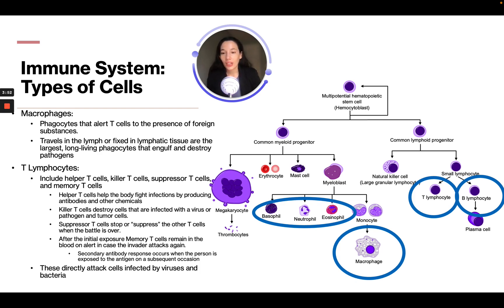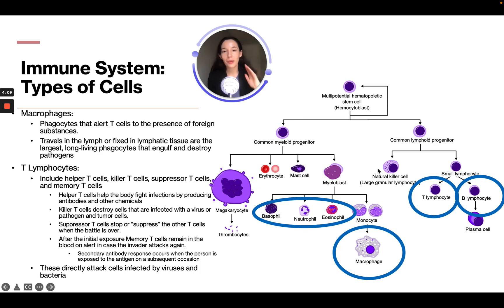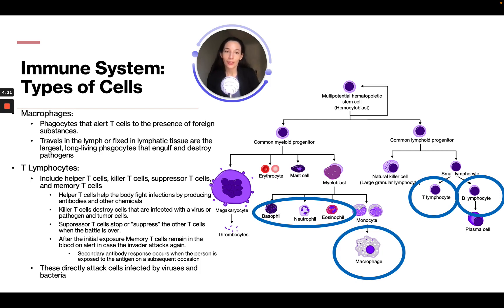A secondary antibody response occurs when the person is exposed to the antigen on a subsequent occasion, and these directly attack cells infected by viruses and bacteria. The names of the T cell types pretty much tell you their definitions: helper T cells are helping, killer T cells are killing, suppressor T cells are suppressing the other T cells, and memory T cells are remembering what the invader looked like.